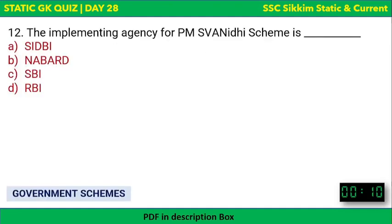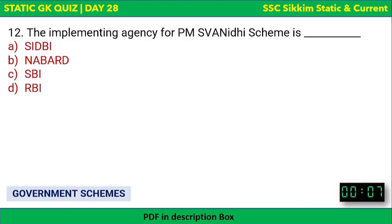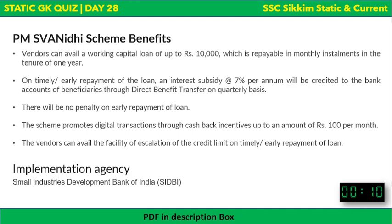The implementing agency of PM SVANidhi scheme: is it SIDBI, NABARD, SBI, or RBI? The implementing agency is SIDBI — Small Industries Development Bank of India. Through this scheme, vendors can avail a working capital loan of up to ₹10,000.